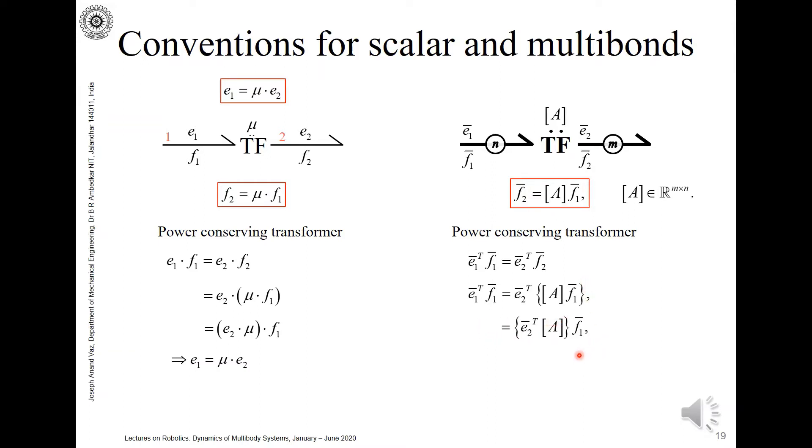We can substitute this f2 is equal to A·f1 here and make some rearrangement of this. Now when we compare the left-hand side and the right-hand side once again, we see that for any value of flow 1, if this relationship is to hold, it's necessary that e1 transpose should be equal to e2 transpose A. We take transpose once again on both sides, and we arrive at the relationship e1 is equal to A transpose e2.